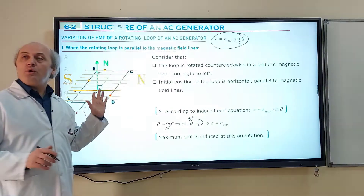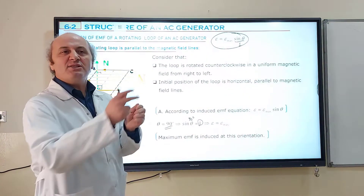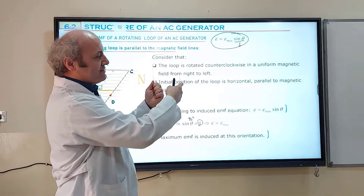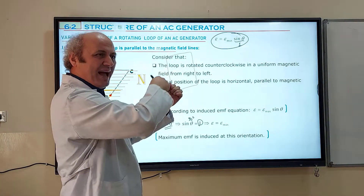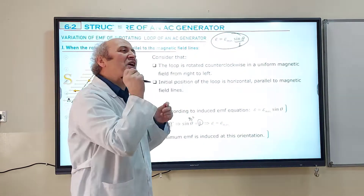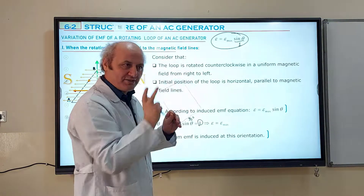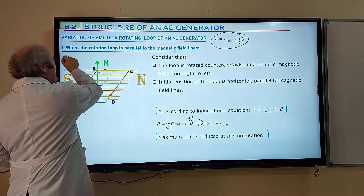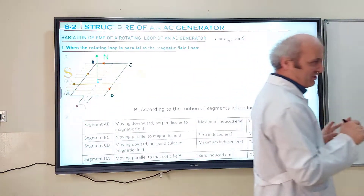We can also study this loop segment by segment. This loop has four sides — each side is one segment: BC, CD, AD, and AB. You can divide the loop into straight wire portions, each being one segment. Before starting this segment analysis, I am going to remind you of a topic from section 6-1, which was the first title we started.